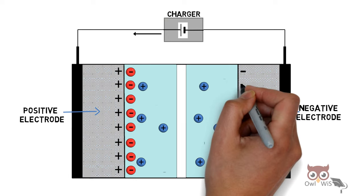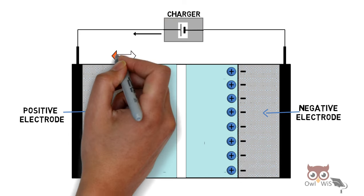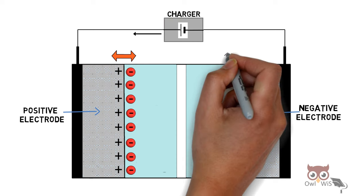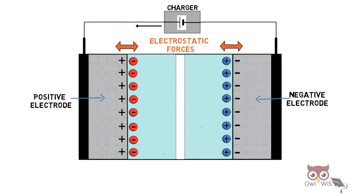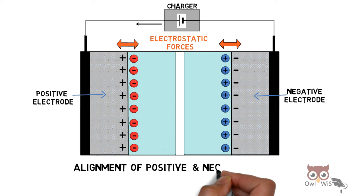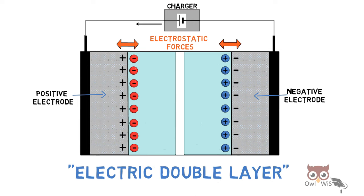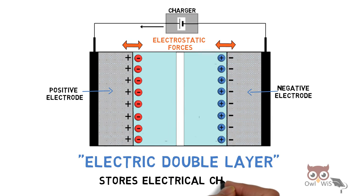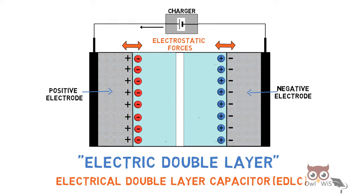Similarly, the negative electrode is charged with negative charge and attracts the positive ions from the electrolyte, forming another layer. The forces of attraction between the electrode and electrolyte are electrostatic forces. The alignment of positive and negative charges across the boundaries causes an electric double layer, responsible for storage of electrical charges. Hence, the capacitor is known as an electrical double layer capacitor, or EDLC.